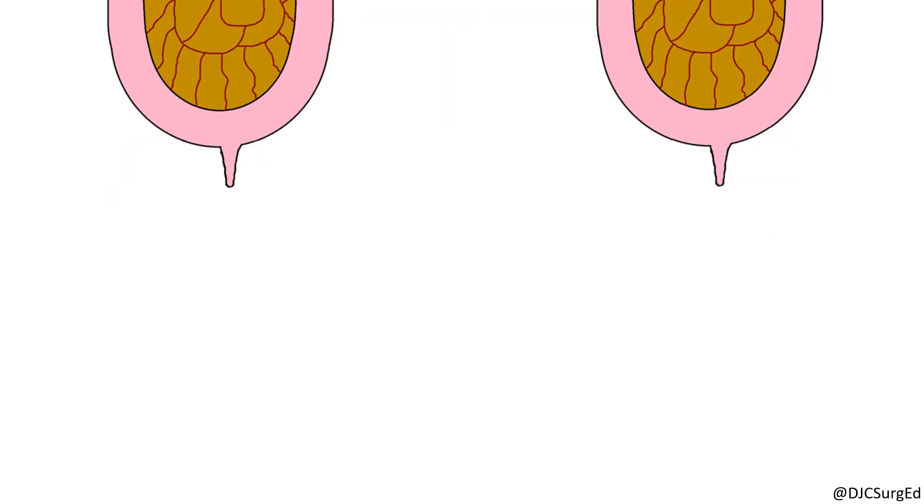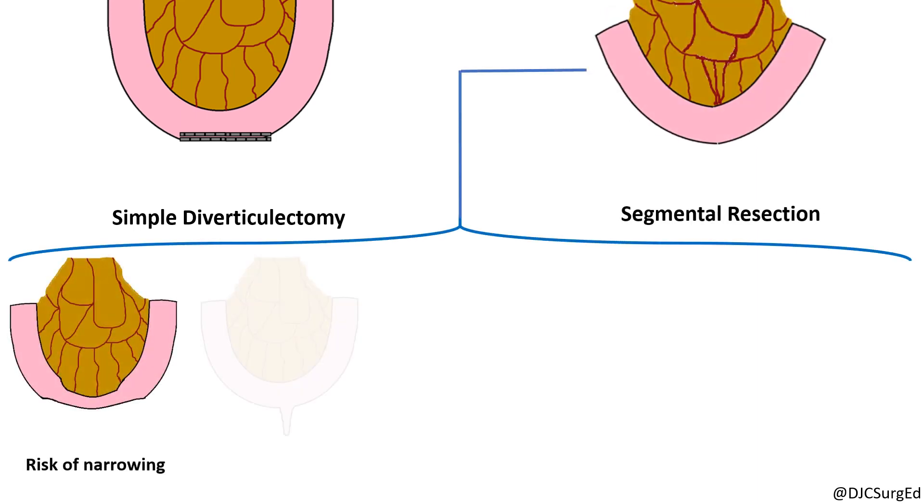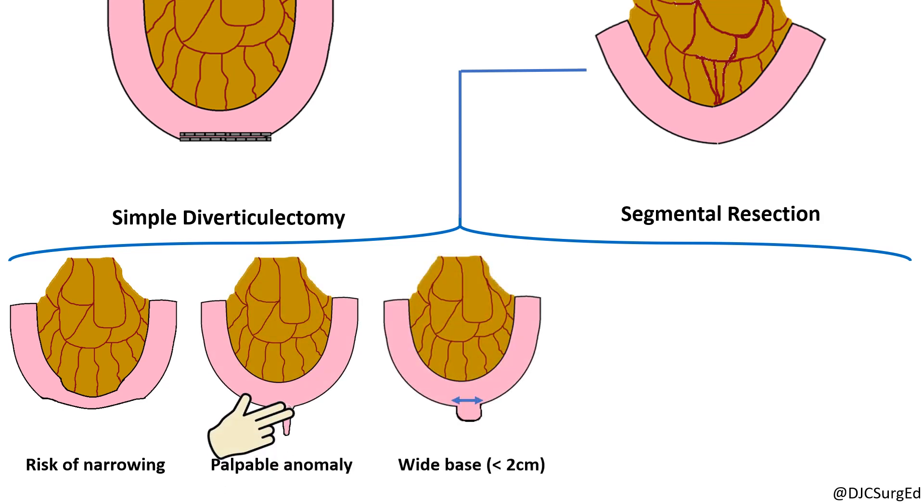A Meckel's diverticulum can be resected by a simple diverticulectomy or by a segmental small bowel resection and primary anastomosis. Segmental resection is preferred if the small bowel lumen is in jeopardy of being narrowed, a palpable anomaly is present at the base of the diverticulum, or the neck of the diverticulum is wide.